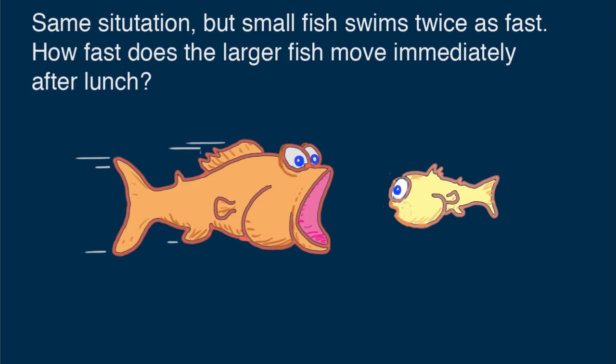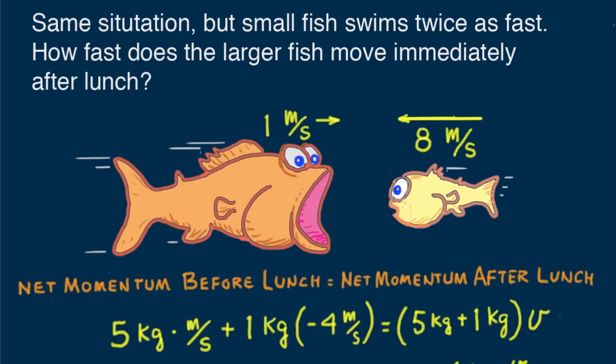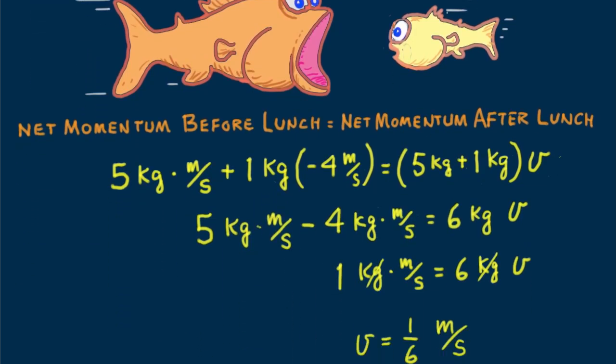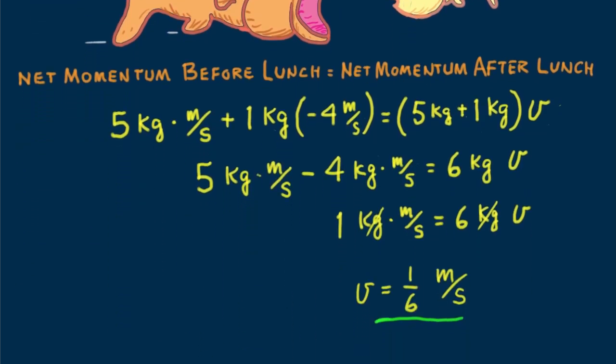Suppose the smaller fish was swimming twice as fast at 8 meters per second. Then we make use of a prior calculations, changing minus 4 meters per second to minus 8 meters per second.